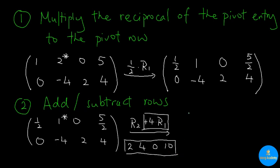So in the new R2, we are going to have two plus zero, which is two. Four plus negative four, which is zero. Zero plus two is two, and ten plus four is fourteen.